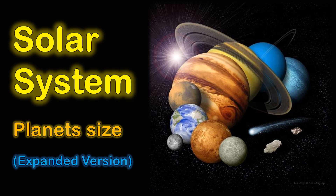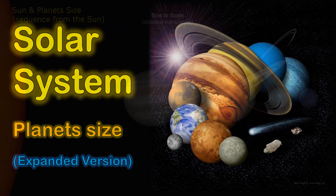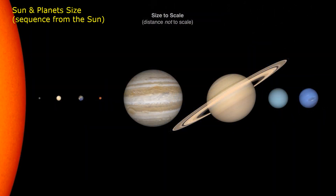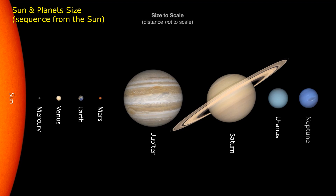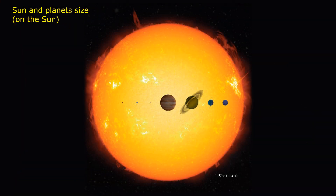Solar system planet size. Sun and planet size sequence from the Sun: Sun, Mercury, Venus, Earth, Mars, Jupiter, Saturn, Uranus, Neptune.